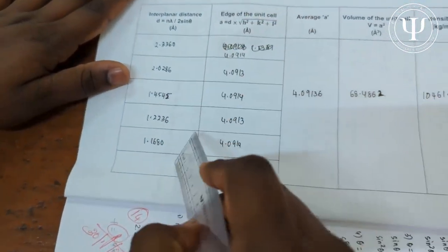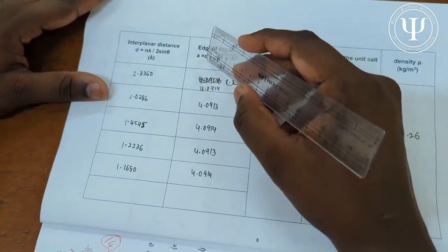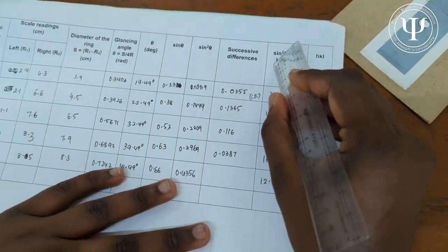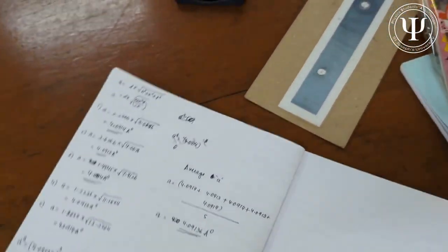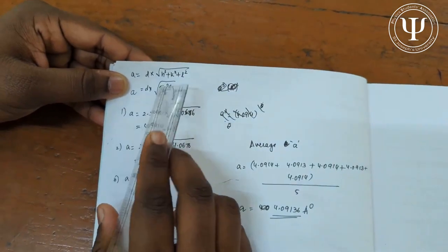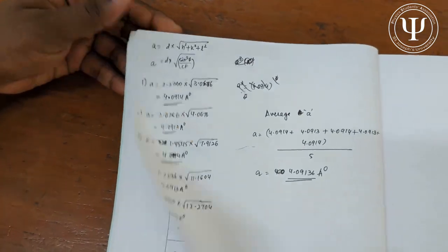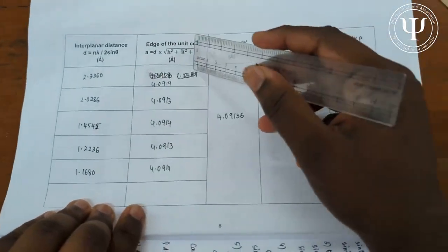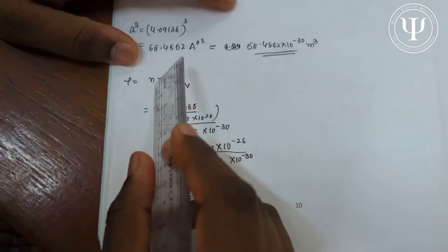The edge length a is found by multiplying each interplanar distance d by √(h² + k² + l²). For instance, a = d × √3.0677. Tabulate all five a values, then find the average by adding all five and dividing by five. Cube the average edge length to obtain the volume V.